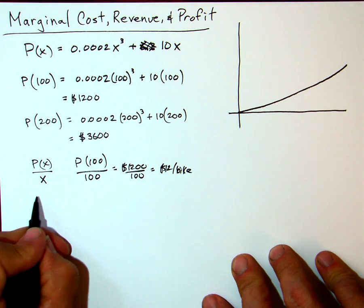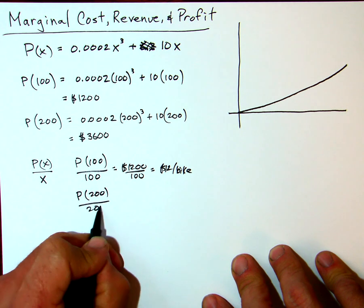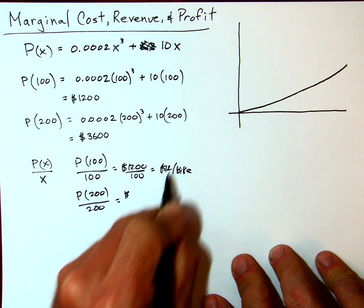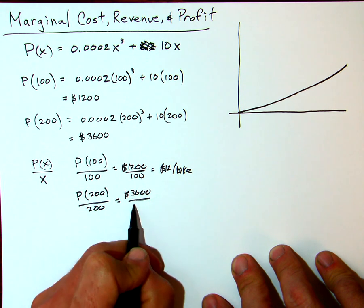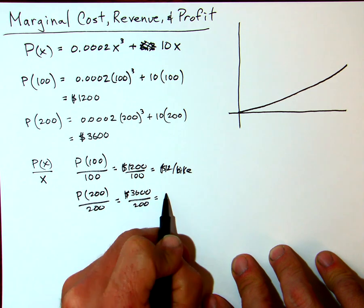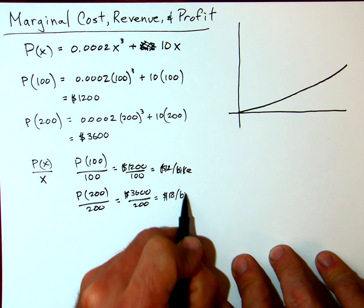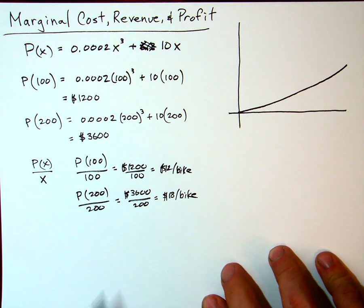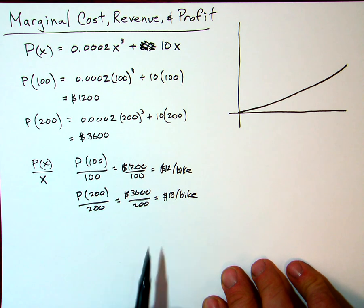But the average profit for 200 bicycles is the 3600 that we had, over 200 bicycles. That's $18 per bicycle. So the more bicycles we sell, the better profit we're going to make per bicycle. Now this is an average over all 200.